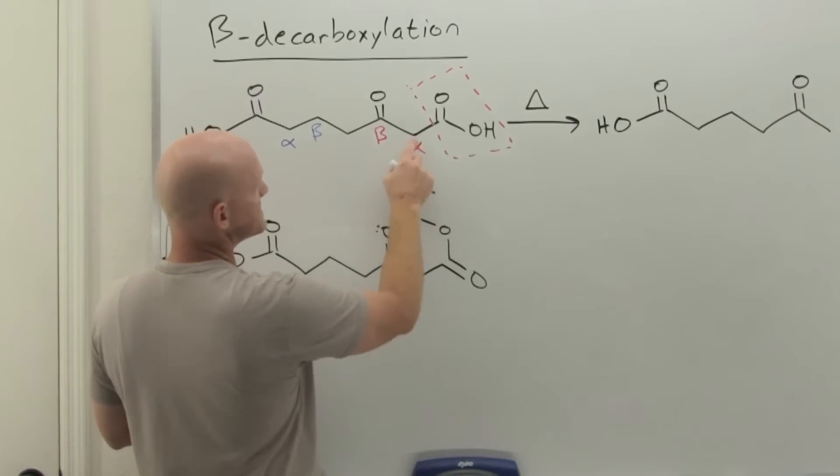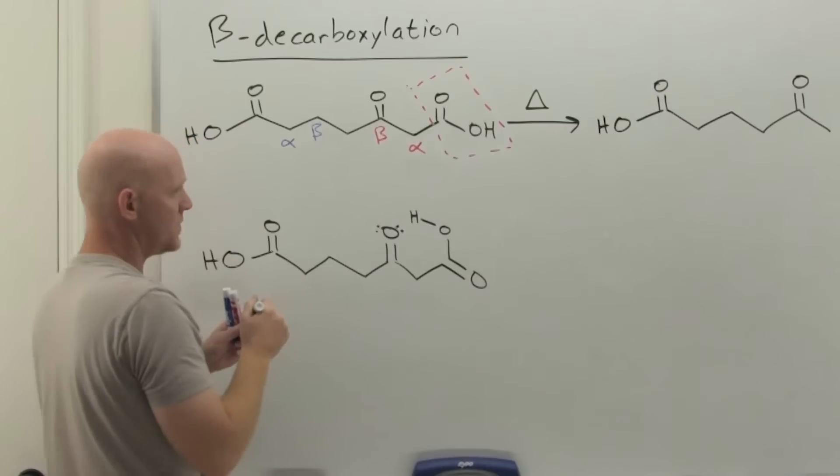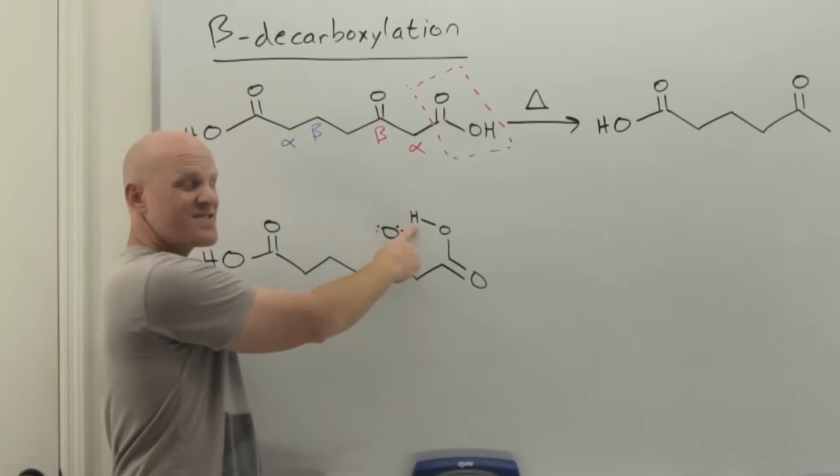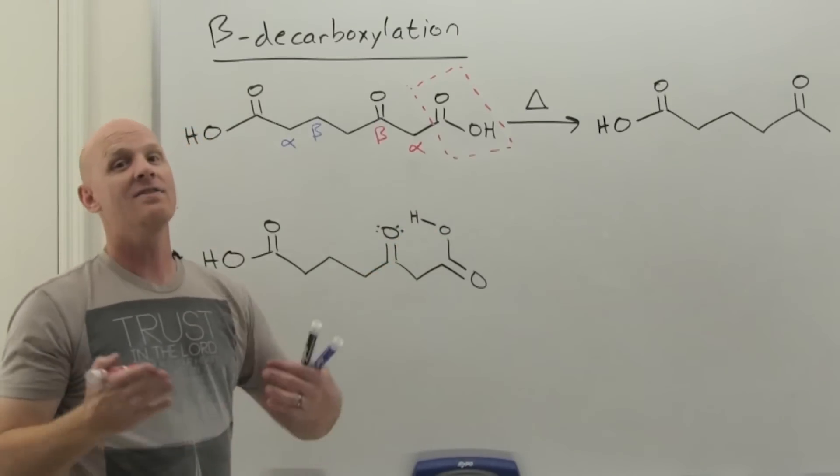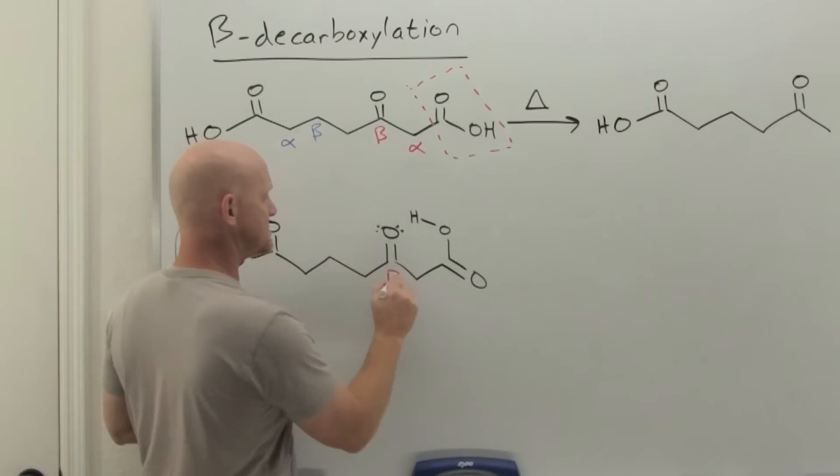If we just rotate our single bond right here, we'll get this position right here and we can see that this oxygen in one of these rotational conformations, this one specifically, ends up right next to the hydrogen of the carboxylic acid. And that's the key to this reaction.